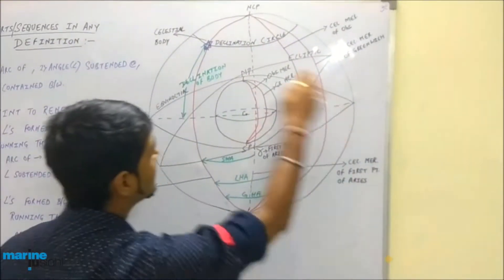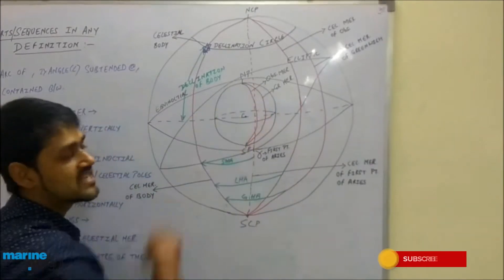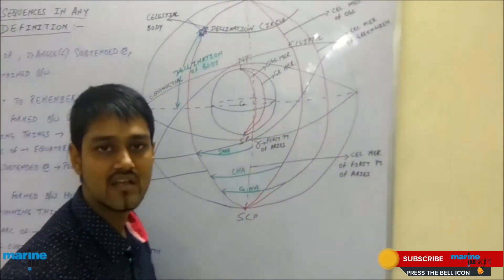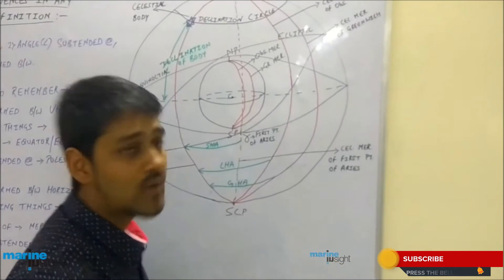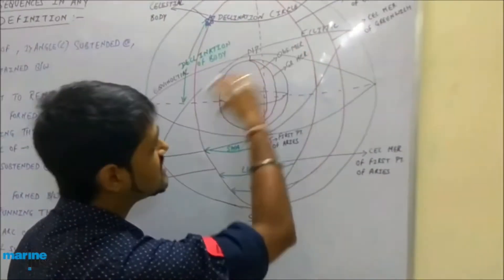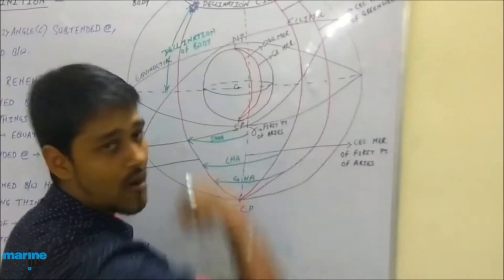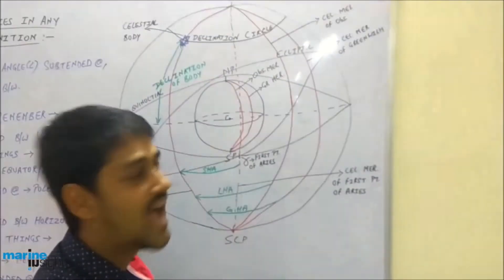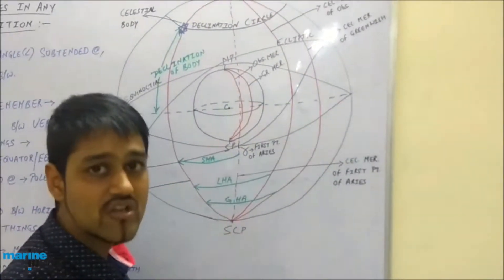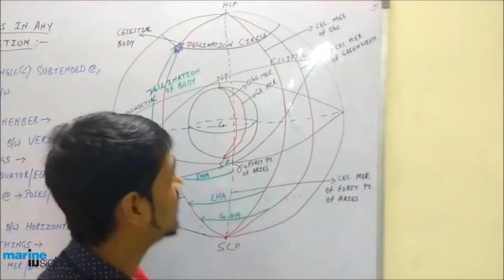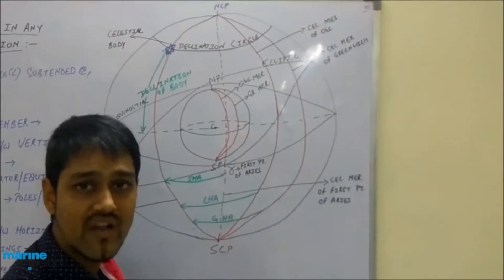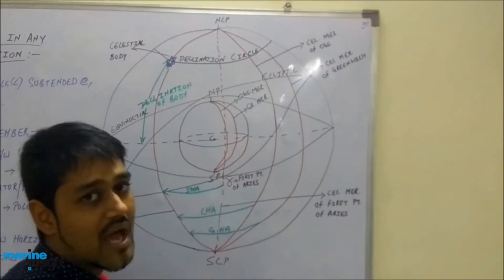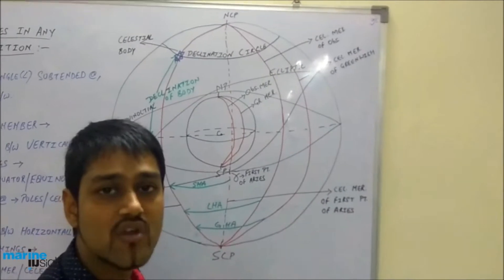The ecliptic is basically the annual apparent path of the sun. It is formed by the expansion of the earth's orbit. The earth's orbit revolves in a period of one year — 365 days — hence this is also known as the annual apparent path of the sun.